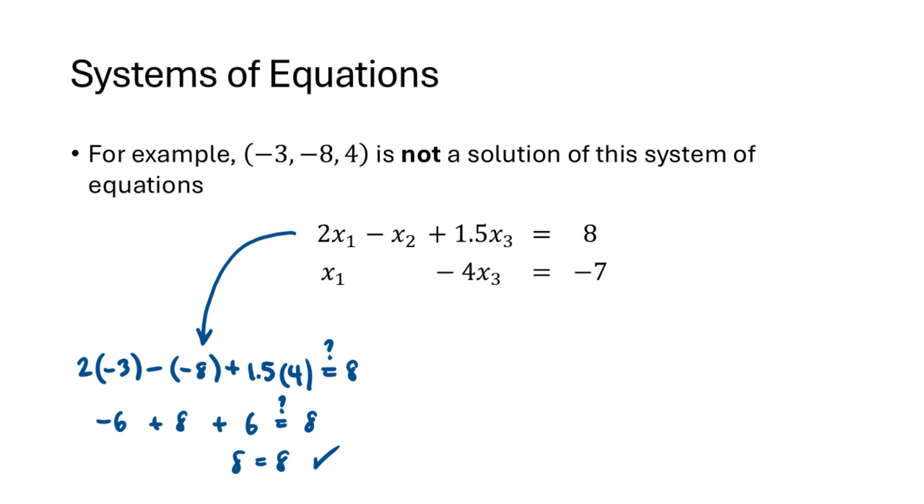Remember, to be a solution of a system of equations, all of the equations would have to be true all at the same time. So now we have to check the second equation, and when we do that we see that the left-hand side does not equal the right-hand side, and that's what tells us that this is not a solution of this system of equations.